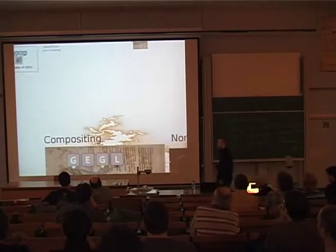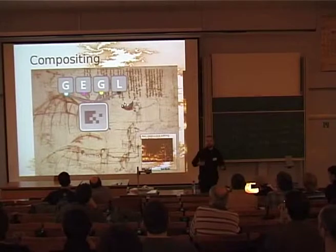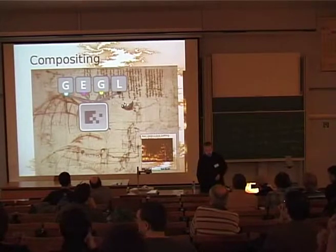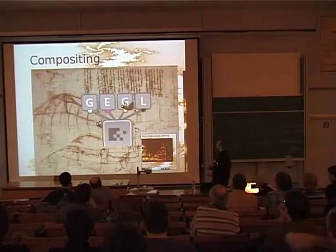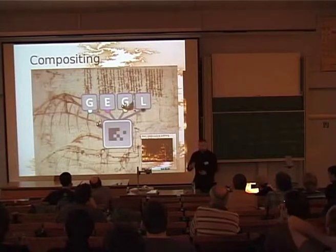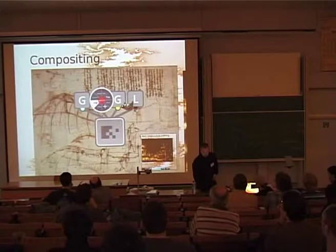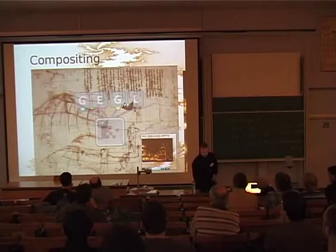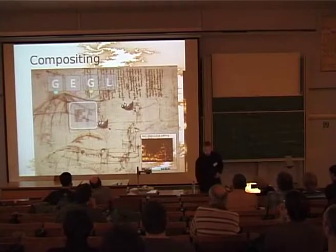One of the main things that GEGL enables is compositing — the combination of images to create new images. In applications like GIMP and Photoshop, one thing you use is layers. The presentation tool is actually using GEGL, so I'm demonstrating compositing in GEGL right now. I'm moving the layer around and I can decide I want to tweak the opacity of this layer. That's the basics of compositing.